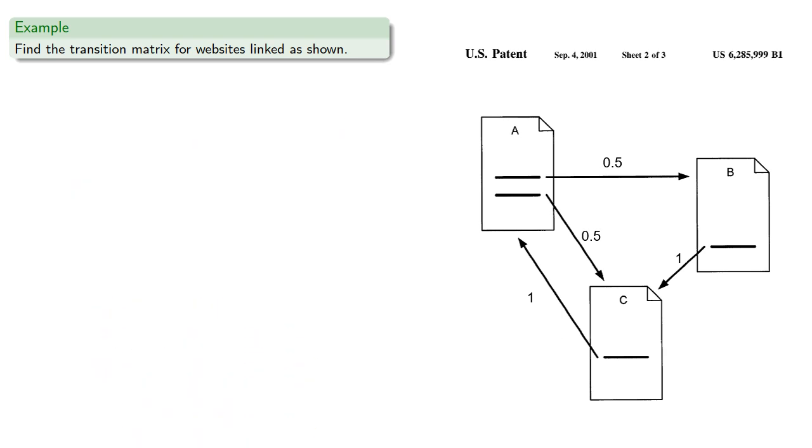So let's construct our transition matrix. So remember the first row will be the probabilities of getting to A from A, B, and C. To get to A, you could have come from A with probability 0, since there's no link from A to itself.